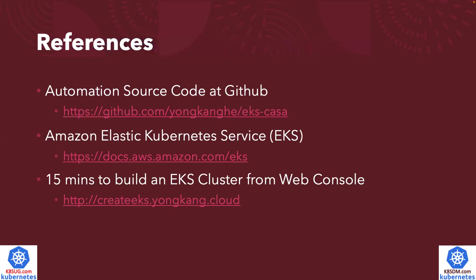Just to include a few reference links here. My automation source code is available from my GitHub page — here is the link. There is also an official Amazon Elastic Kubernetes Service documentation page listed here. But if you really prefer to create the EKS cluster from a web console, I also have a YouTube video to show you how to create it step-by-step from the AWS web console — it takes about 15 minutes.